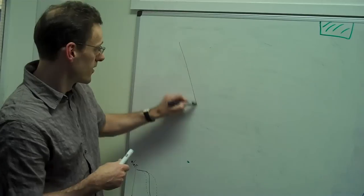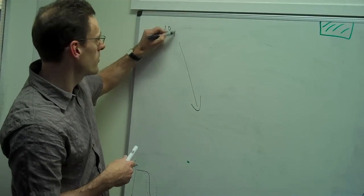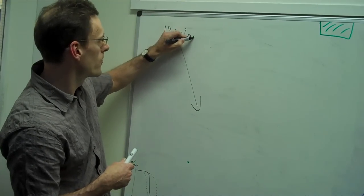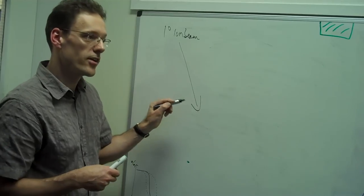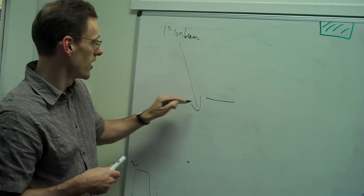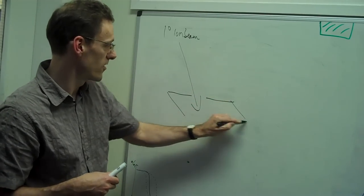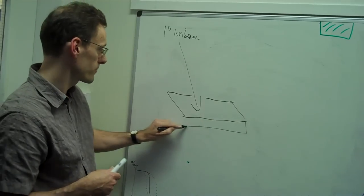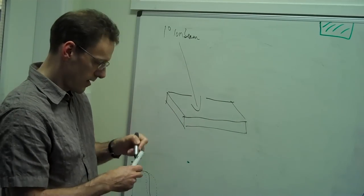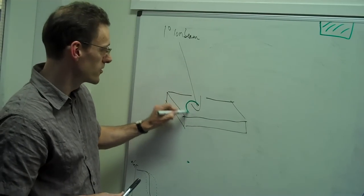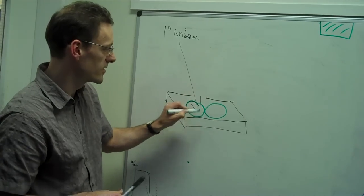What we have is a primary ion beam which is focused via an ion microscope onto a tissue section, the specimen down here. I'm going to represent within this specimen two cells. Here's one green cell, here's another green cell.